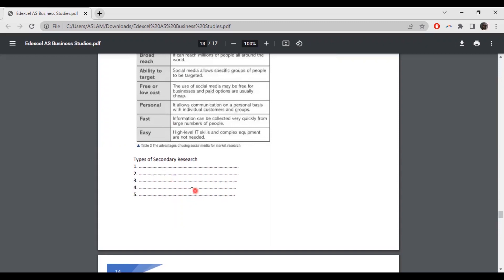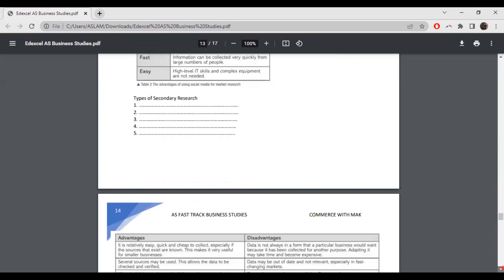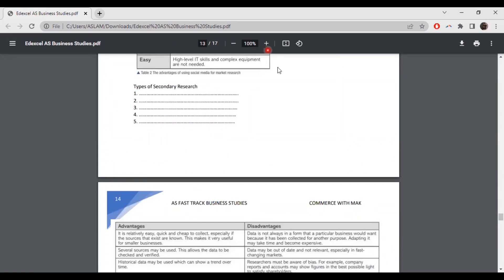So now there are types of secondary searches. Put a topic in your writing book. I'll ask you to write. I'll give you certain things to write. Take your writing book. You can write number one, social media. Number two, newspaper magazines. Number three, television radio. Number four, books. Number five, reports. Number six, reports carried out by competitors.